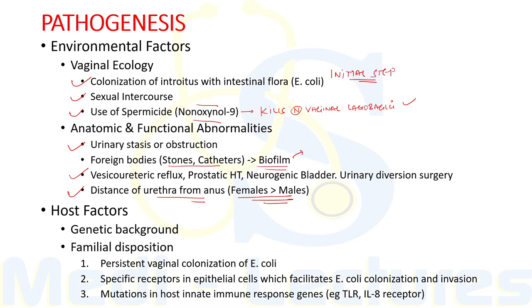Vesicoureteric reflux, prostatic hypertrophy, neurogenic bladder, and urinary diversion surgery all create an environment favorable for UTI. The shorter distance of the urethra from the anus in females compared to males accounts for the higher incidence of UTI in females. Regarding host factors: genetic background influences individual susceptibility to recurrent UTI, and familial predisposition is well documented. Females with recurrent UTI often had their first episode before age 15 and have a maternal history of UTI.